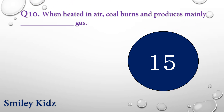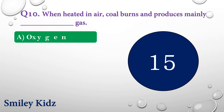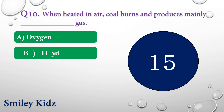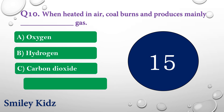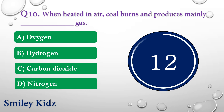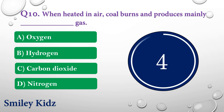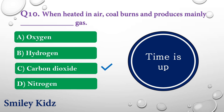Question number ten: When heated in air, coal burns and produces mainly dash gas. The options are: A) Oxygen, B) Hydrogen, C) Carbon dioxide, or D) Nitrogen. Your time is up and the right answer is option C — Carbon dioxide. When heated in air, coal burns and produces mainly carbon dioxide gas.